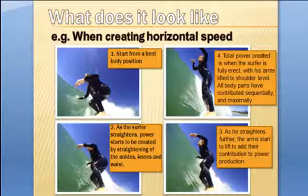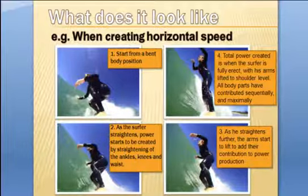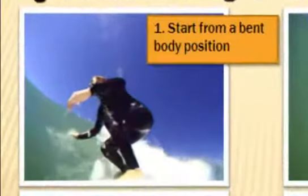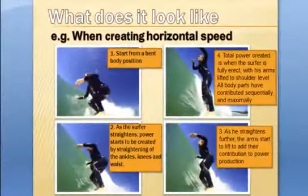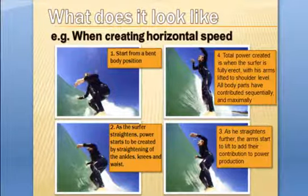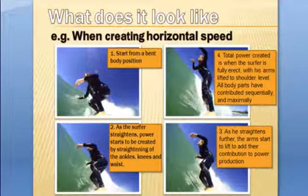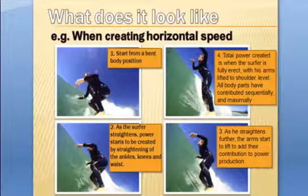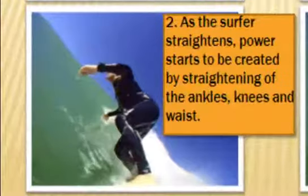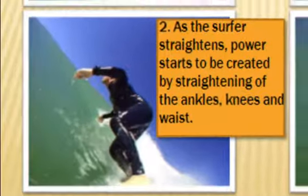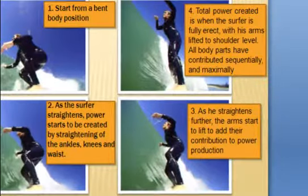As a part of the body gets to its full contribution — say the straightening of the ankles — as it reaches the full contribution of its power production for that turn, then the part above the ankle, the lower leg and the knee, straighten forcefully as well. That gets added to the ankle straightening, and that knee straightening gets added at the precise time to the waist straightening. That all combines and adds, plus the rotation of the upper body as you come out of the turn, to create the maximum force.